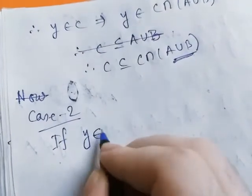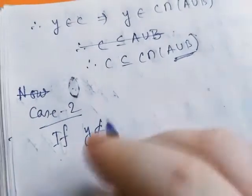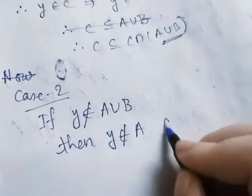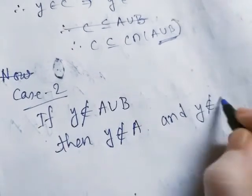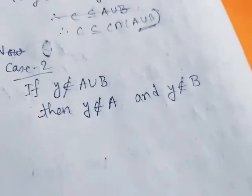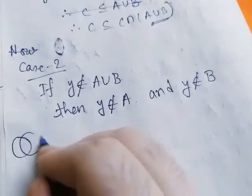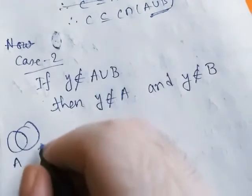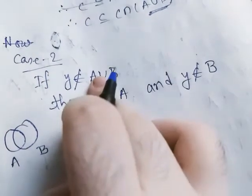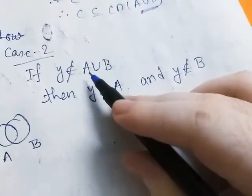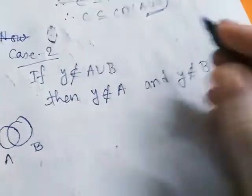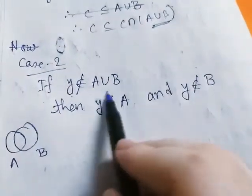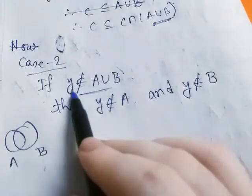Case two: if y does not belong to A union B, then y does not belong to A and y does not belong to B. Because if y belongs to A then y also belongs to A union B, or if y belongs to B then y also belongs to A union B. So this is obvious. Now we have to prove C subset of C intersection A union B, and we will get a contradiction here if we assume y does not belong to A union B.